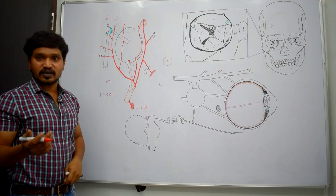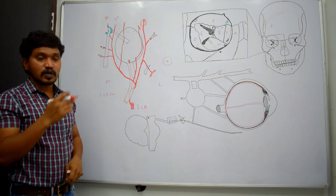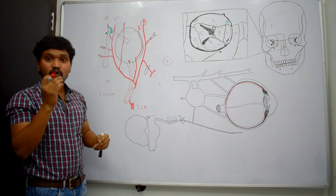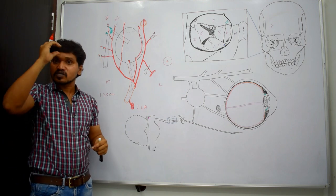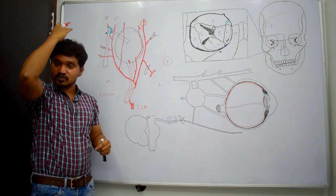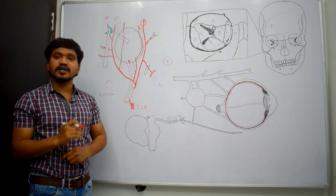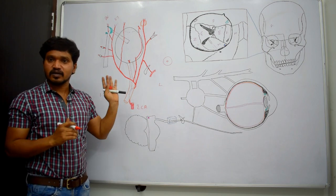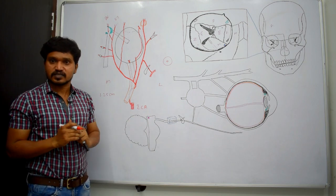The supratrochlear artery also winds around the supraorbital margin and enters the forehead and scalp to supply those structures.